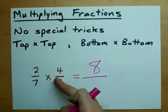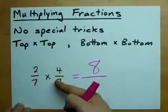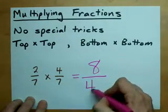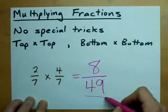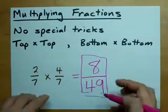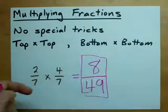Bottom times bottom. 7 times 7 gives 49. This is my answer. It's that easy. Top times top, bottom times bottom.